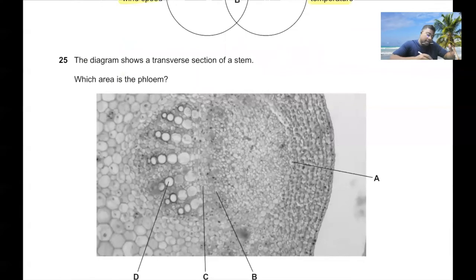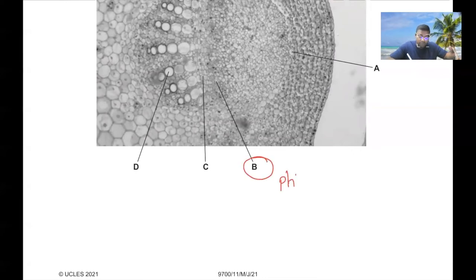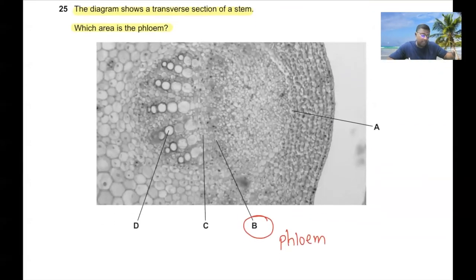Question 25: The diagram shows a transverse section of a stem. Which area is the phloem? We can see D is the xylem, C is the cambium, so B should be the phloem. 25B is the correct answer.